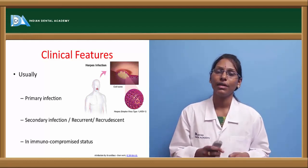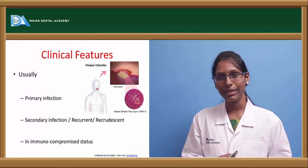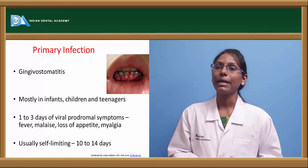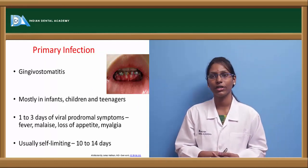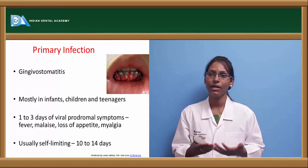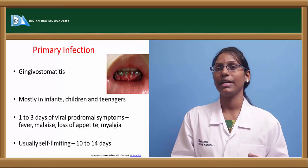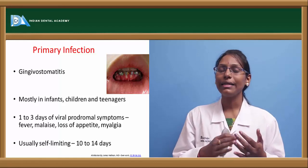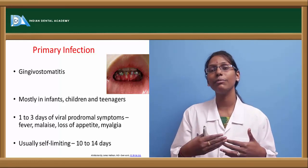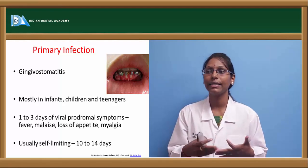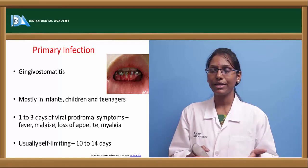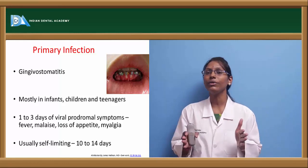The HSV infection manifests in three different variants: primary infection, recurrent or recrudescent secondary infection, and infection in immunocompromised patients. In primary infection, it manifests at the site of inoculation with clinical features such as gingivostomatitis, pharyngitis, and genital lesions. Most commonly seen in children, infants, and teenagers, it has prodromal symptoms of one to three days before vesicle formation — including fever, malaise, and headache. Primary HSV infection is usually self-limiting and extends only up to 10 to 14 days.